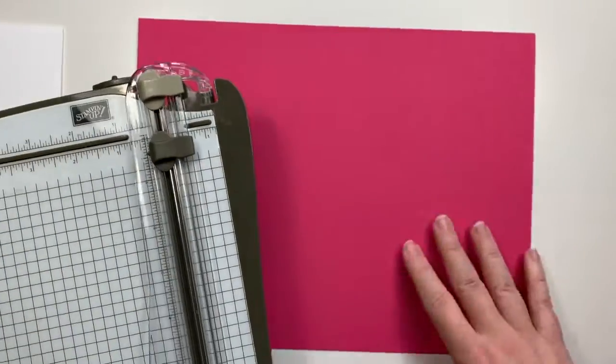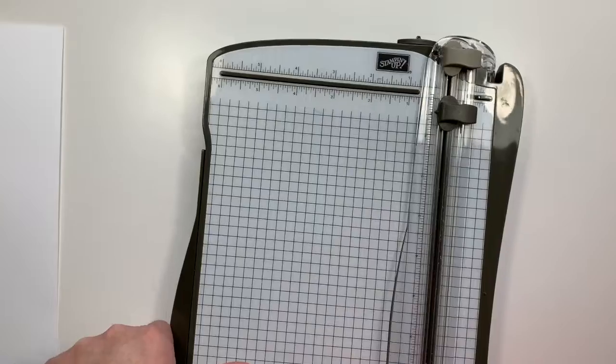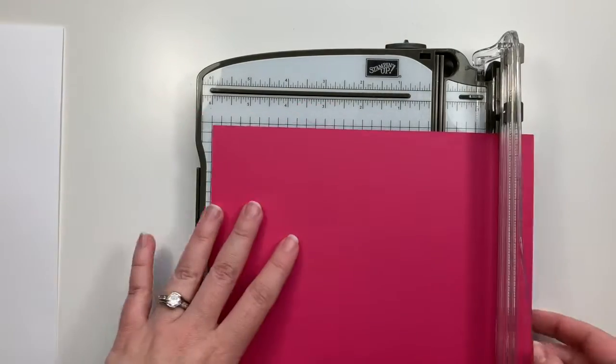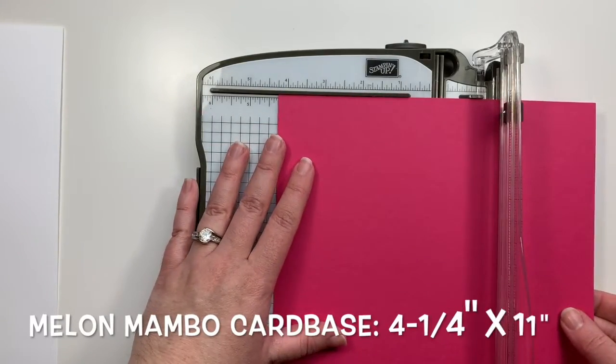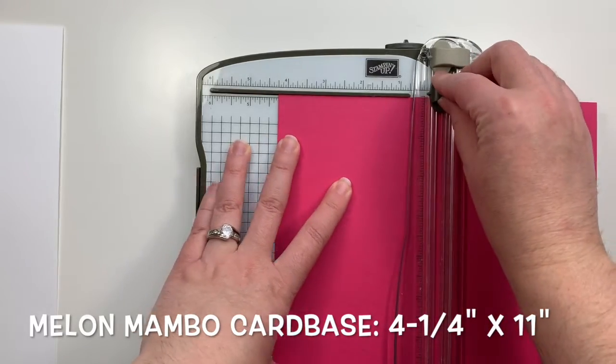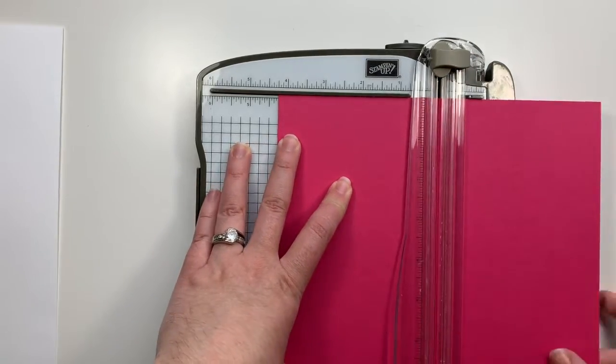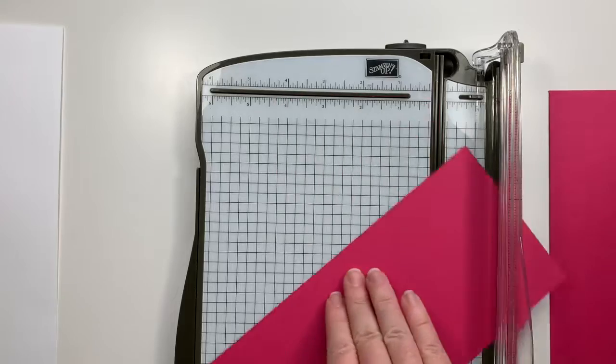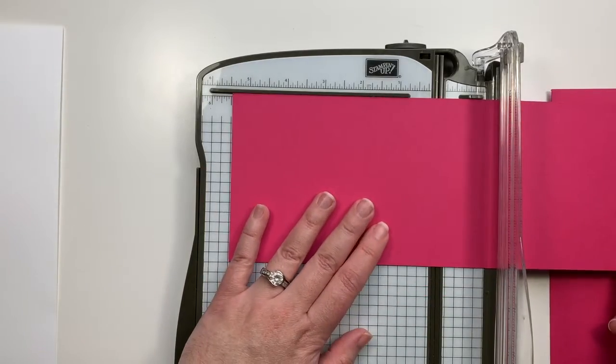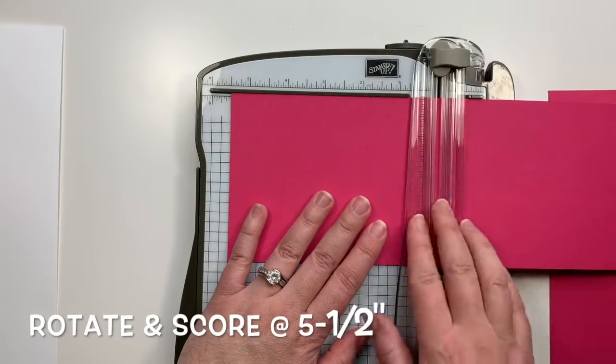So I have two pieces of standard cardstock. This is Melon Mambo 8½ by 11 and I'm going to trim this down so that I can get two pieces that are 4¼ by 11.